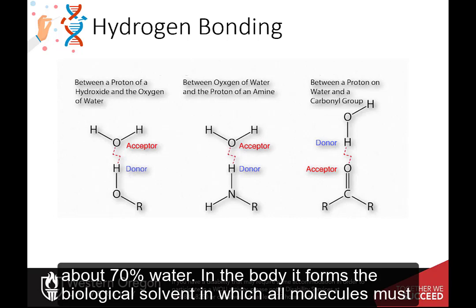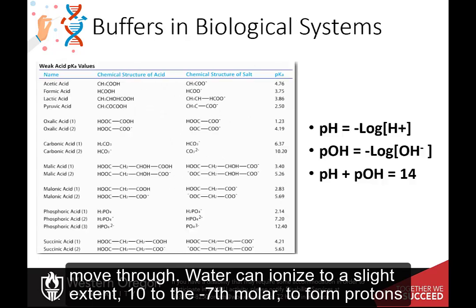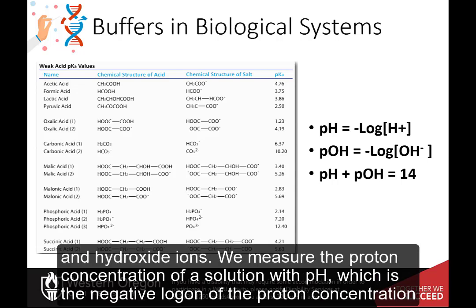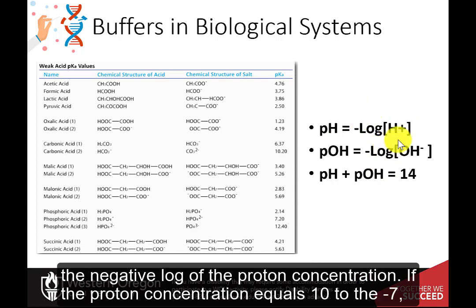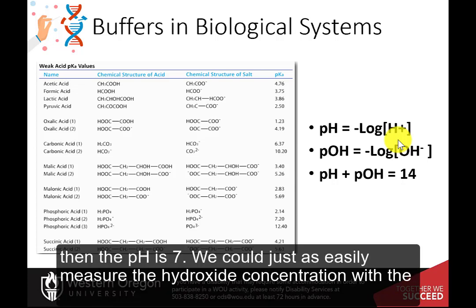In the body, water forms the biological solvent in which all molecules must move through. Water can ionize to a slight extent — 10 to the negative 7th molar — to form protons and hydroxide ions. We measure the proton concentration of a solution with pH, which is the negative log of the proton concentration. If the proton concentration equals 10 to the negative 7th, then the pH is 7.